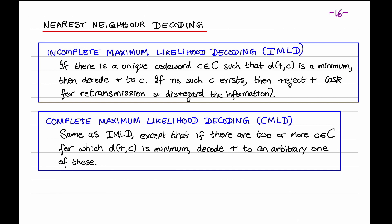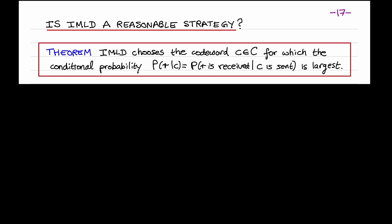If retransmission is not possible, the second flavor of nearest neighbor decoding is Complete Maximum Likelihood Decoding, or CMLD. CMLD is similar to IMLD, except that if there are two or more codewords which minimize the distance between R and C, then the channel decoder corrects R to an arbitrary one of these codewords. I'll next justify that IMLD and also CMLD are reasonable decoding strategies.